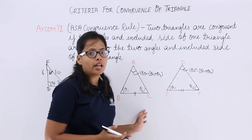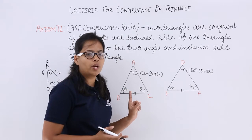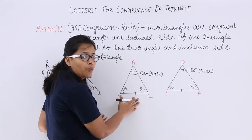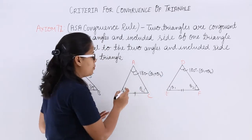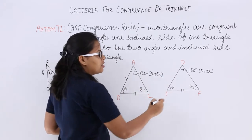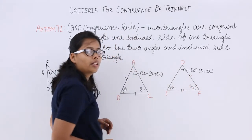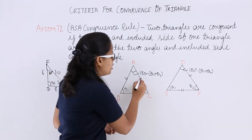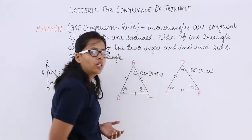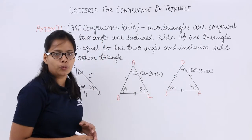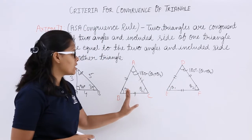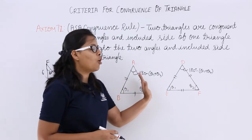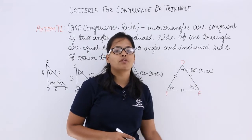One more important thing here: one side should be equal — any one of the sides. It is not mandatory that only the included side between the two angles must be equal. Any of the sides of one triangle can be equal to any side of the other triangle — whether it is the side not included between the two angles, or either of the other two sides.